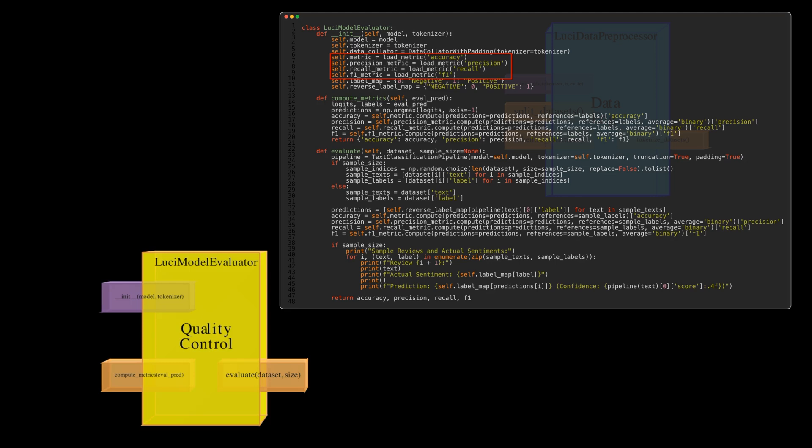It creates a data collator with padding object which will help prepare batches of data for the model during evaluation. And it loads four metrics from the Hugging Face Evaluate library. Accuracy, the overall percentage of predictions. Precision, how many of the positive predictions were actually correct. Recall, how many of the actual positive cases were correctly identified. And F1, a balanced metric that combines both precision and recall. It defines a two-way mapping between numerical labels, zero for negative sentiment and one for positive sentiment, and their corresponding text labels. The compute metrics method is the core of the evaluation process. It calculates the metrics mentioned above by comparing the model's predictions to the actual labels. The evaluate method computes metrics and provides some screen output to visualize the data set and the performance of the base model.